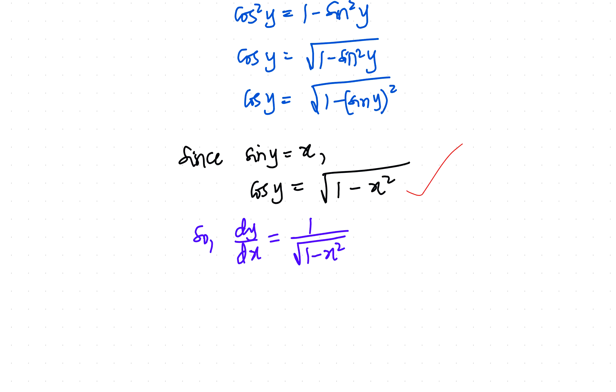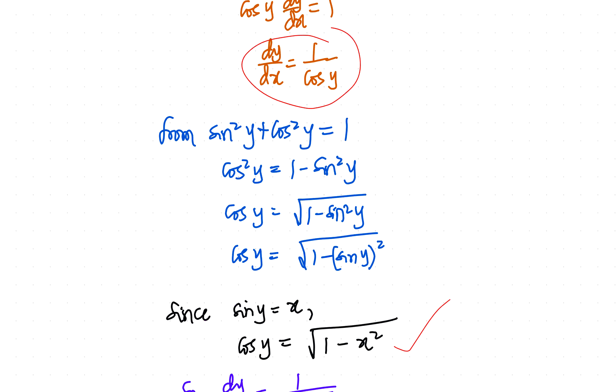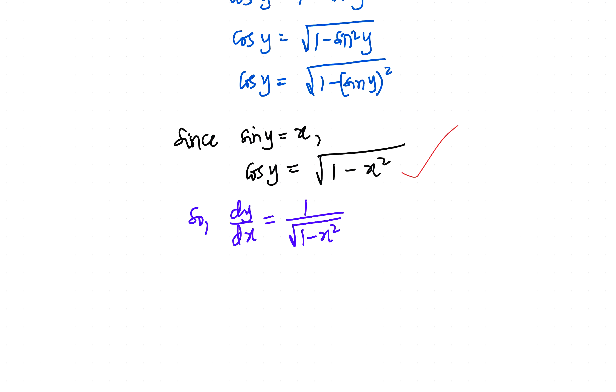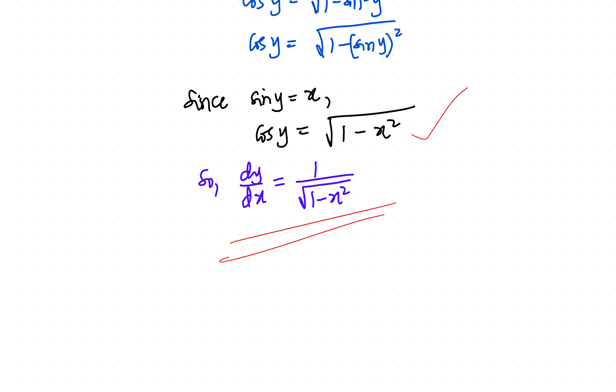And from there, you remember your dy dx is one over cos y. So now cos y is square root of one minus x squared. Finally, dy dx is equal to one over square root of one minus x squared. And that's how it's been.